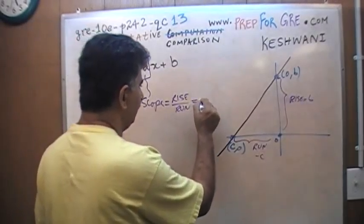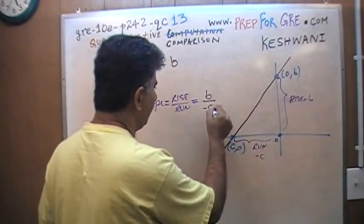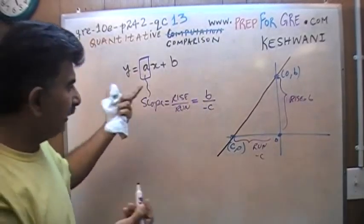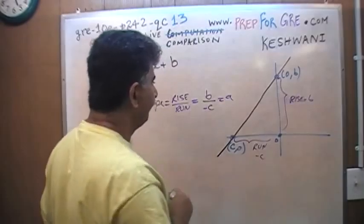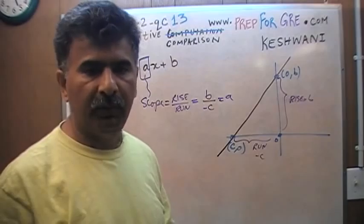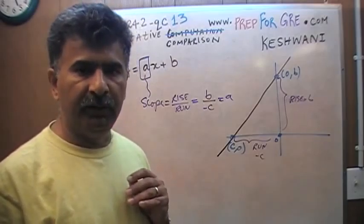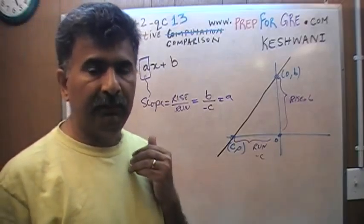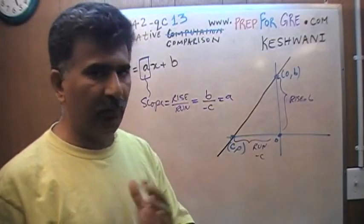So if you're talking about the line going through these two points, this is the rise, which is B, and here is your run, which of course is negative C. The slope of this line is actually B over negative C. Voila. And that is your A. So this quantity equals A.